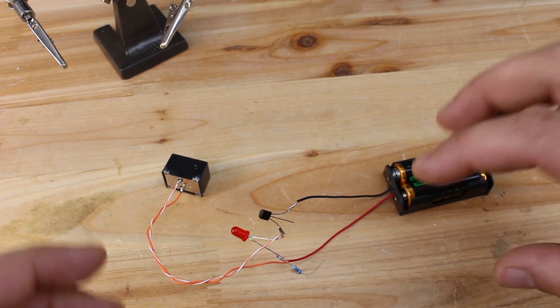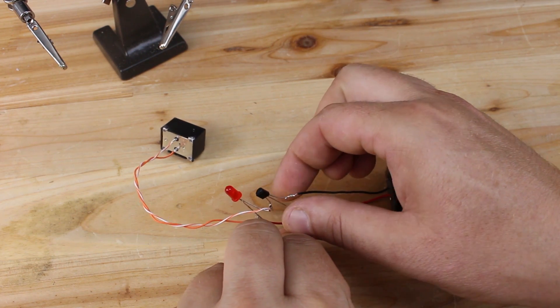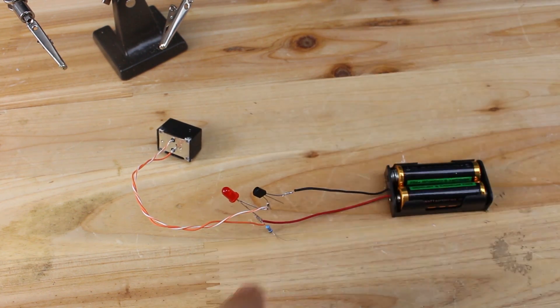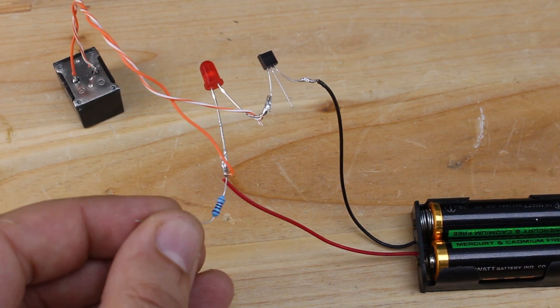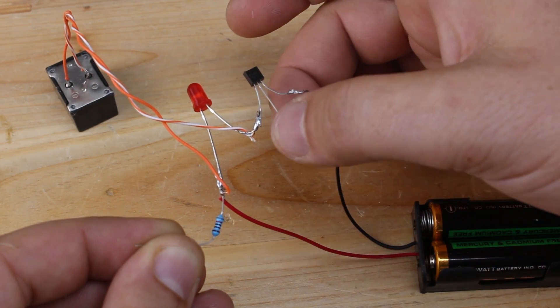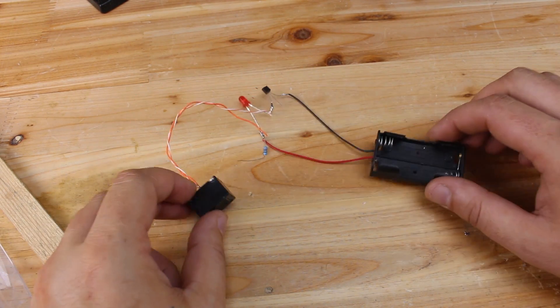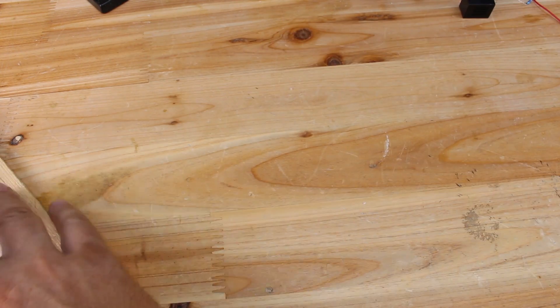Before we proceed to next step, check the circuit that is working. By touching the resistor and transistor base, the electric circuit is finished. Now we're gonna make the sensor.